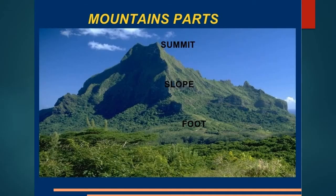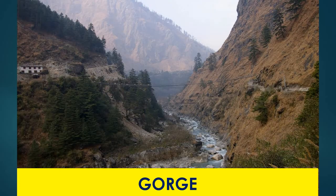We have the parts of the mountains. Number one is the summit, or the top of the mountain. Then the slope. And the foot of the mountain. Of course, the gorge — the gorge is the part located in between the mountains, the spaces in between.